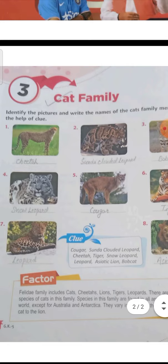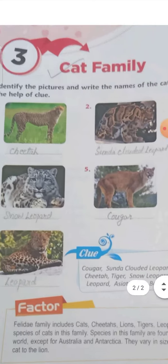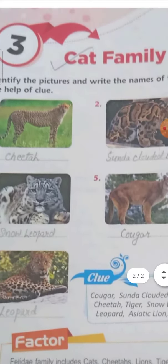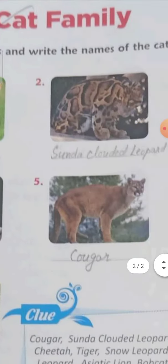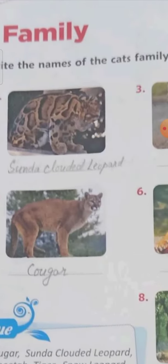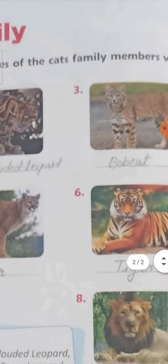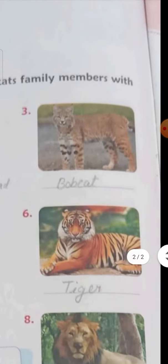The first answer is Cheetah — C-H-E-E-T-A-H, Cheetah. The second is Sunda Clouded Leopard — C-L-O-U-D-E-D, Clouded, L-E-O-P-A-R-D, Leopard — Sunda Clouded Leopard. The third is Bobcat — B-O-B-C-A-T, Bobcat.